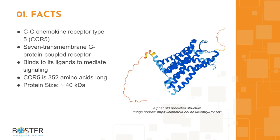Topic 1: quick facts about CCR5. CC chemokine receptor type 5, or CCR5, is a 7-transmembrane G protein-coupled receptor that binds to its specific ligands to mediate cellular signaling. CCR5 is 352 amino acids long and runs about 40 kilodaltons on a western blot.